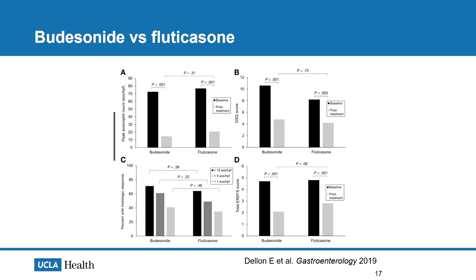If deciding which topical steroid to use, a study by Elan Dillon and colleagues compared budesonide versus fluticasone. There was improvement in all patients who used either budesonide or fluticasone compared to placebo, across all parameters: peak eosinophil count, dysphagia scores, eosinophil counts, and EREFS scores. However, comparing the two active treatments, they were on the same level for all parameters, proving that both topical budesonide and fluticasone are equally effective. The choice depends on patient preference.